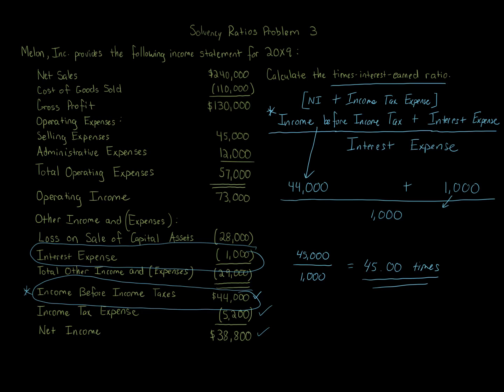That's what this calculation is all about — it's part of the solvency analysis and is used to measure the risk that interest payments will not be made if earnings decrease. It's very important from a creditor standpoint. Here the ratio is 45 times, which is very high. The higher the ratio, the more likely interest payments will be paid if earnings decrease, and the better it looks to a lender considering lending money to the business.